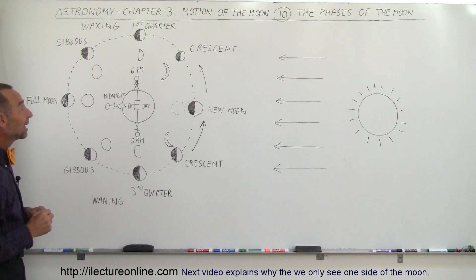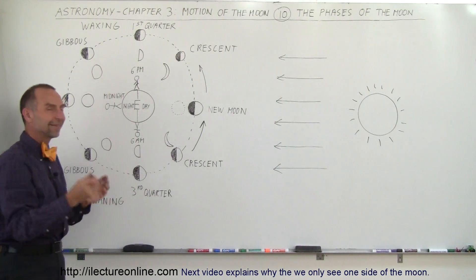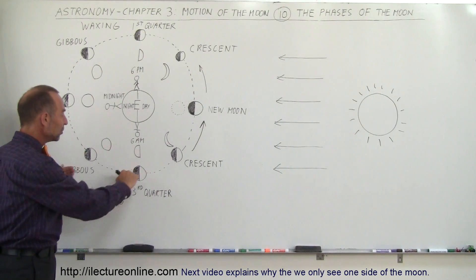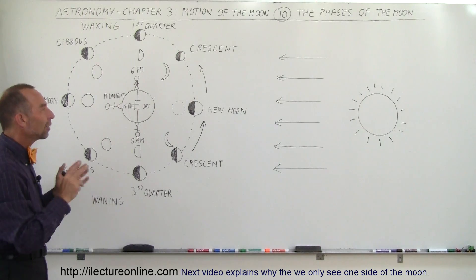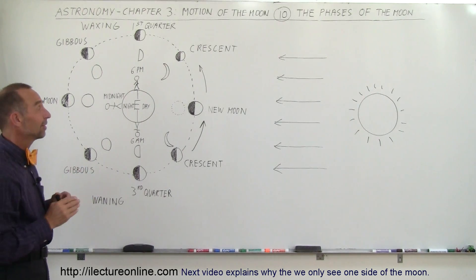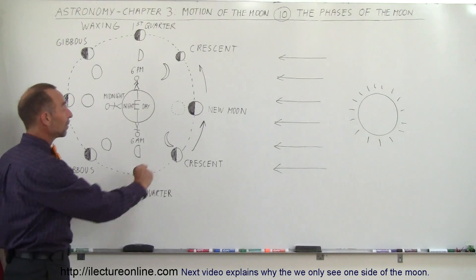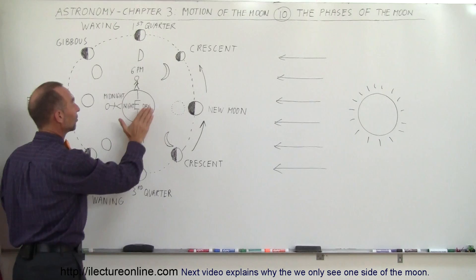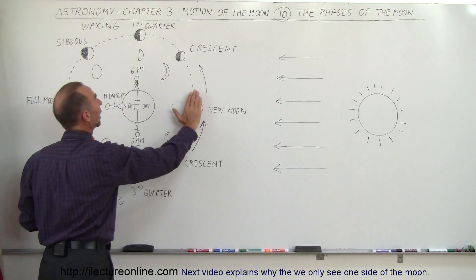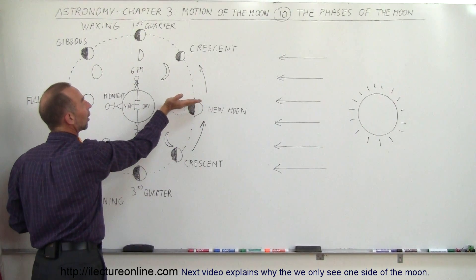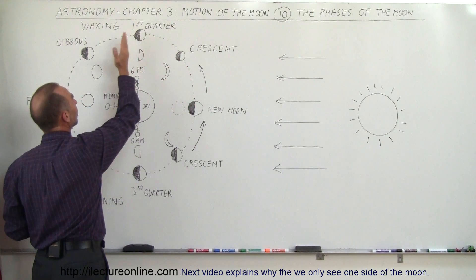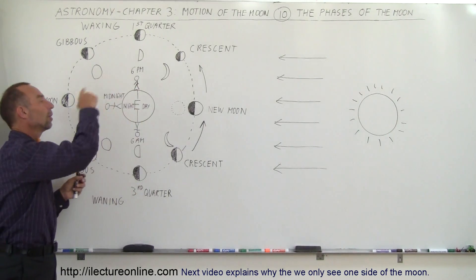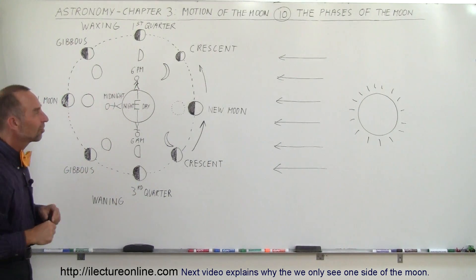No matter which side the Moon is on, the same face of the Moon is always pointed towards the Earth, so we never see the back side of the Moon. It may appear because of the changing phases that we see different parts of the Moon, but that's not correct — we always see the same side of the Moon, sometimes a small sliver of it, sometimes the whole side, but always the same side. As the Moon goes around the Earth, it rotates at the same rate as its orbit, and since the rotation is in sync with the orbit, it always shows the same face to the Earth.